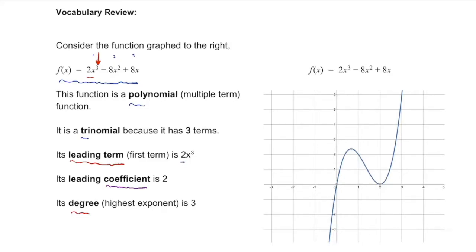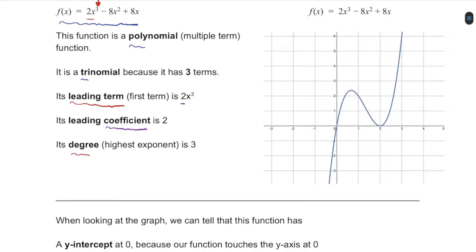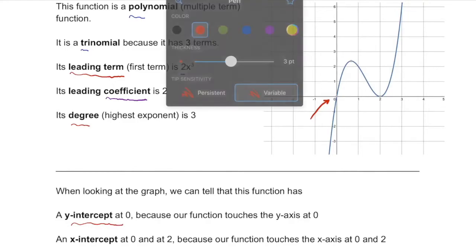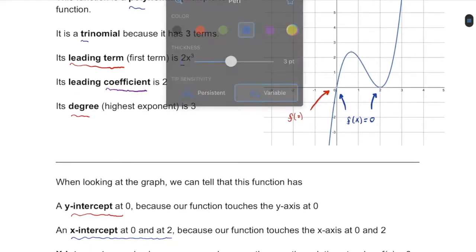This is what the graph looks like, but we're going to be able to graph it using our own brain power, using our understanding of zeros and end behavior. We're going to graph the y-intercept — which is at zero, since if x is zero, y is zero — and the x-intercepts, which occur at x equals zero and x equals two. The x-intercepts are also known as zeros.